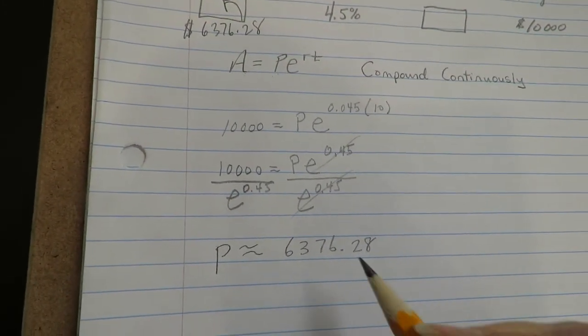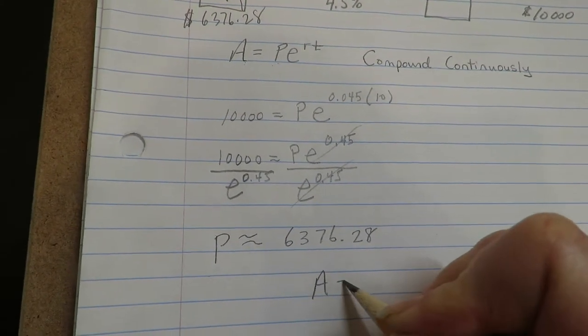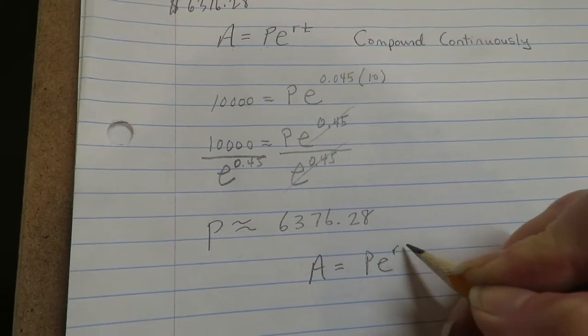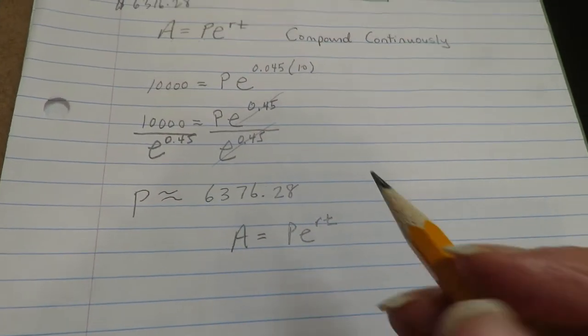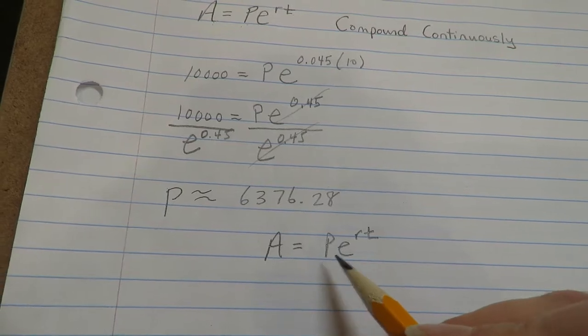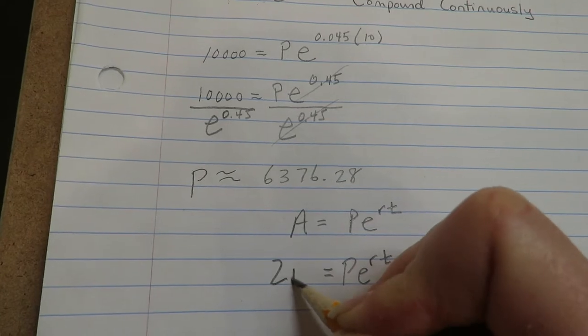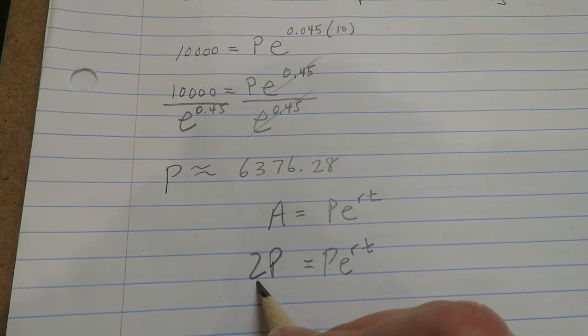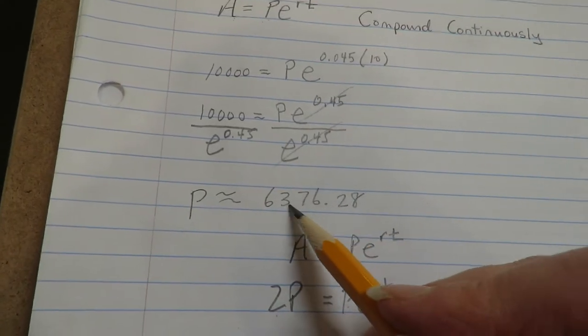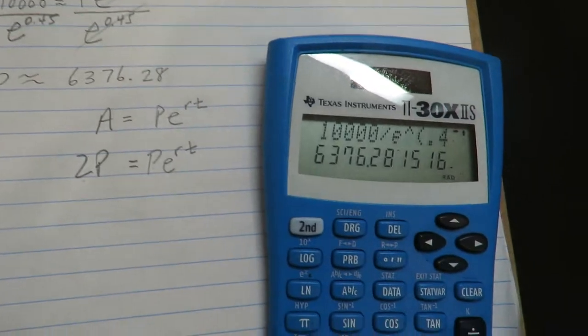And time to double, okay. So time to double means that there's two ways to do this. You could just do it algebraically. You could say, well, if I start with an amount P, how long would it take to have 2P? That's one way to do it. The other way to do it is to multiply the P value times 2.